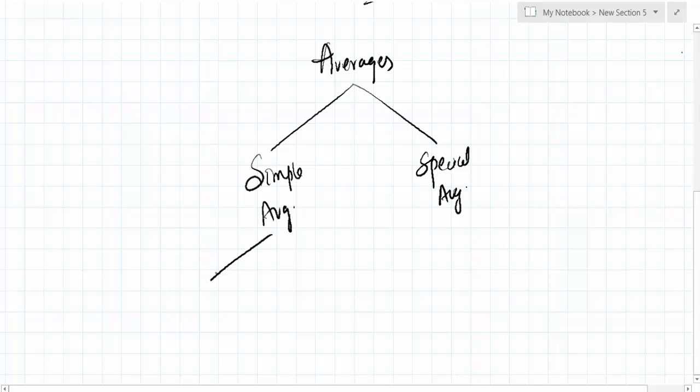So simple average basically includes mean, it covers median, then we have mode. And the special averages are basically the geometric mean, which I will write as GM, and then harmonic mean, which I am writing as HM.